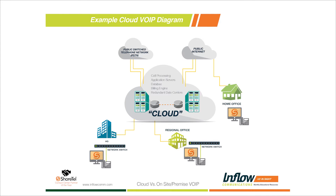This example shows a two-office or three-office setup — a home office, regional office, and headquarters — where you're simply plugging an IP handset and call control software into the network switch. From there, everything is in the cloud: call processing, application servers, redundant data centers, and redundant connections to the public switched telephone network and internet.